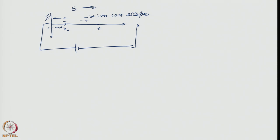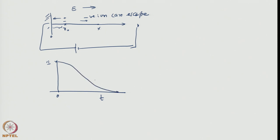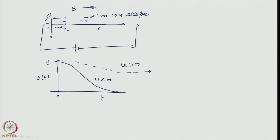We can illustrate this with a graph of survival probability as a function of time. If this is unity, then for the case where the bias u is less than zero, survival probability decays to zero. Whereas for u greater than zero, the survival probability takes a different form, settling at a finite value e to the power minus (u·x-naught / D). This graph illustrates the result of finite survival when the drift velocity is positive.